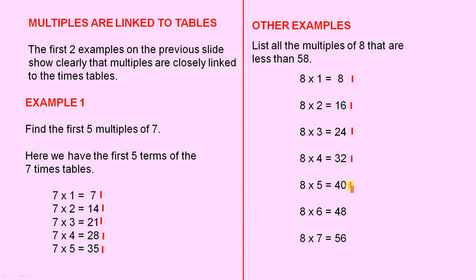8 times 4 is 32. 8 times 5 is 40. 8 times 6 is 48. And 8 times 7 is 56. So they are all the multiples that are less than 58.